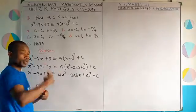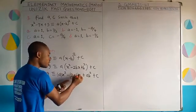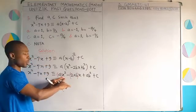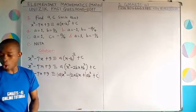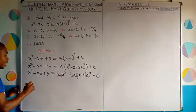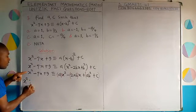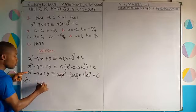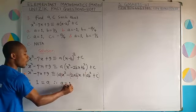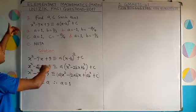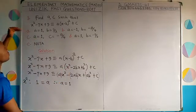Comparing the coefficient of x squared: on the left it is 1, on the right it is A, so A equals 1. This means the answer is between options C and D — option B is eliminated. The coefficient of x on the left is minus 7, which equals minus 2AB. Since A equals 1, the negatives cancel and 7 equals 2B, giving B equals 7 over 2.